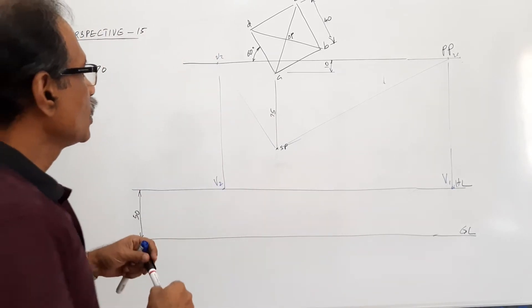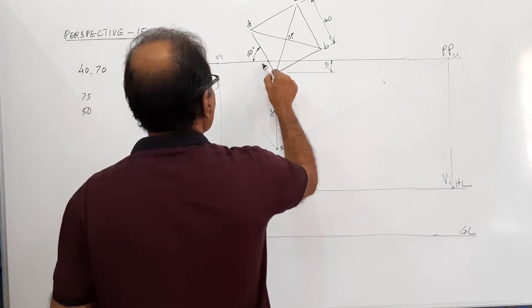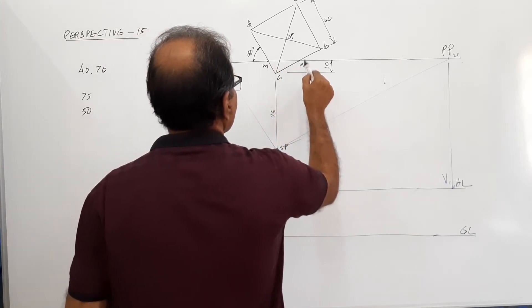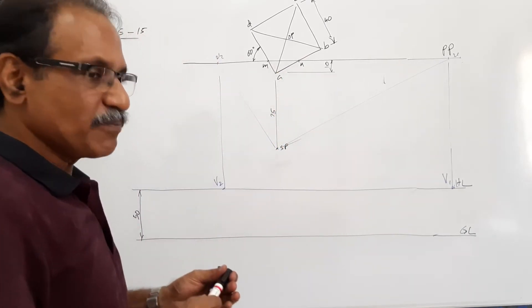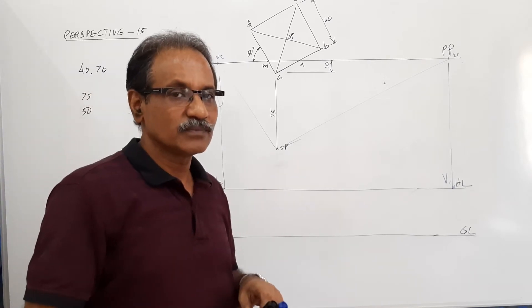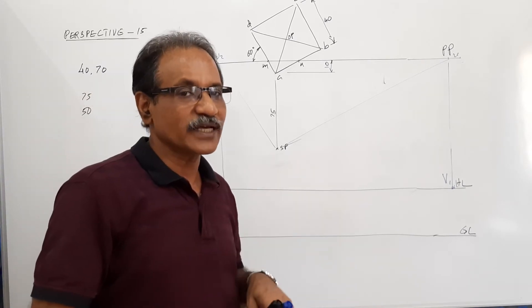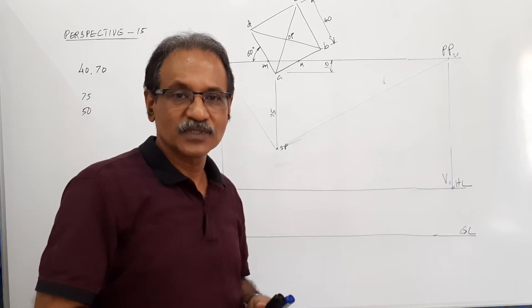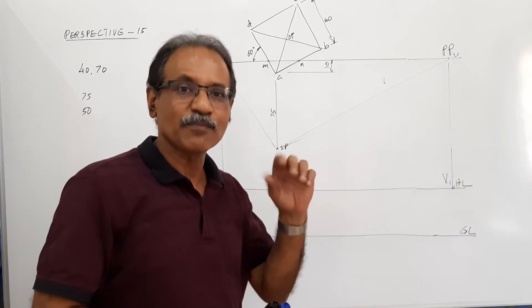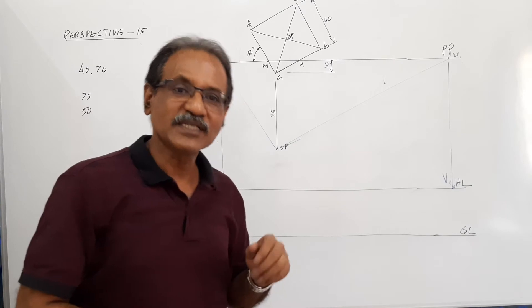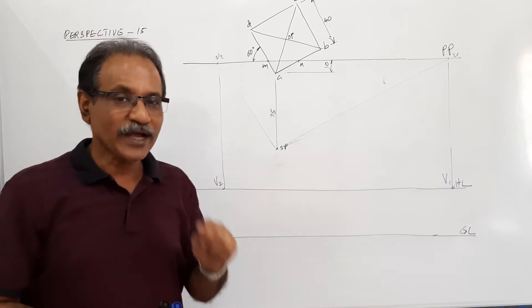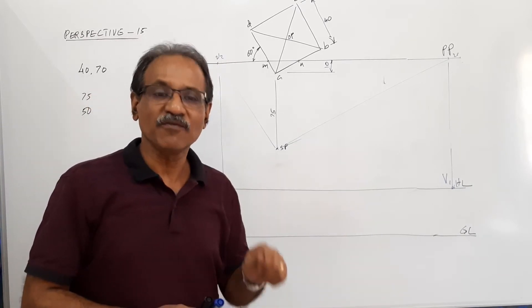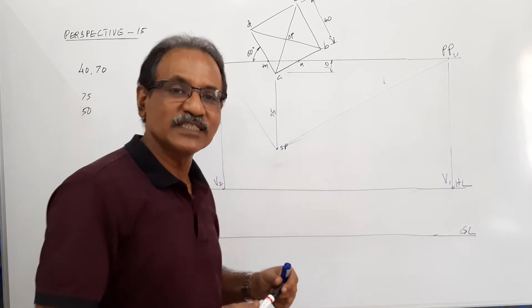Now, I call this M. I call this N. M is a point on the ground. M is a point on BP also. A point that is on the ground as well as BP will have its perspective on GL. You know that.